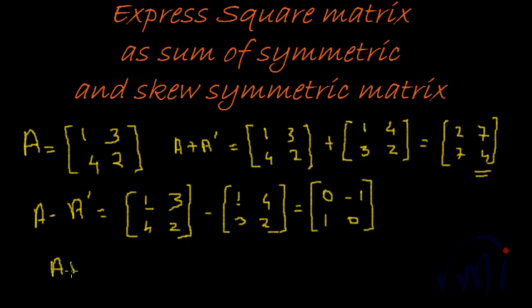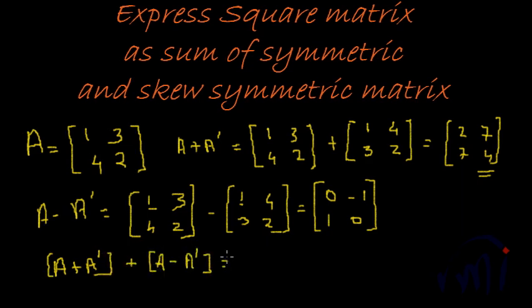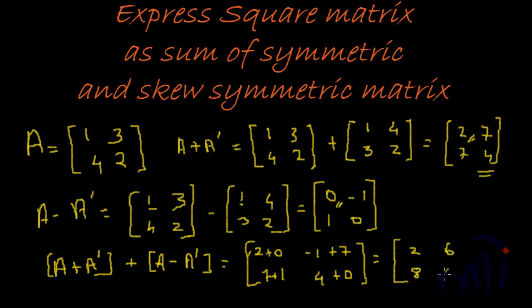Now, if we add the A plus A dash with A minus A dash, we get, we are adding these two, right? We get 2 plus 0 which is 2, minus 1 plus 7 is 6, 7 plus 1 is 8, and 4 plus 0 is 4. Which translates into 2, 6, 8 and 4.